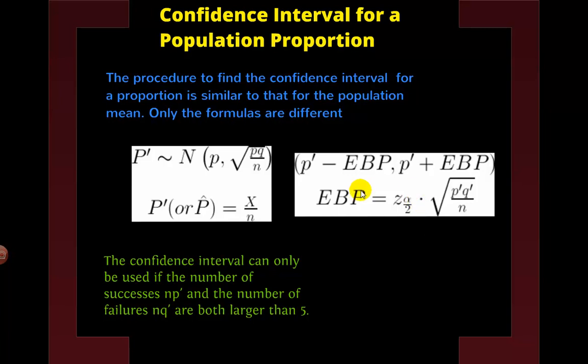But again, we use our Z table. We subtract from the proportion point estimate, and we add to the point estimate, and we get our interval. So the steps are still the same. It's just that the formula is a little different.